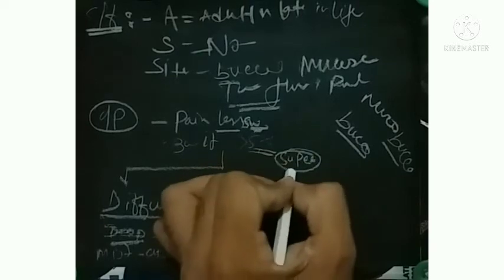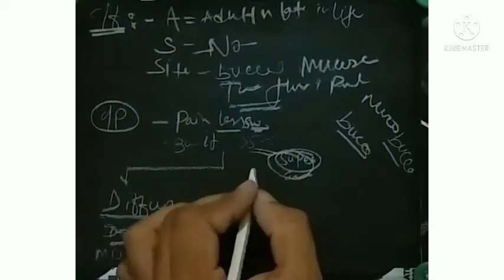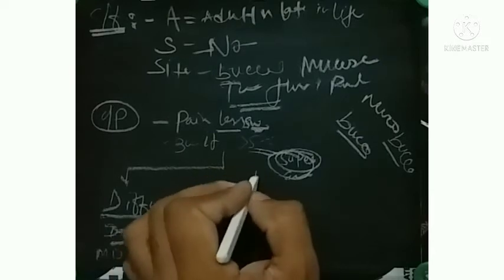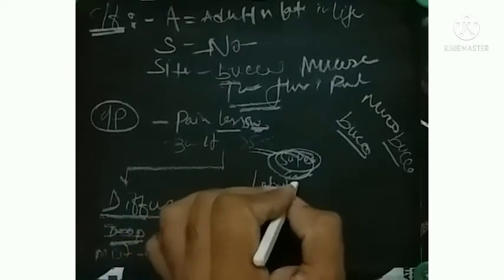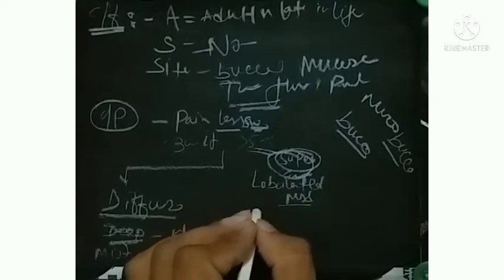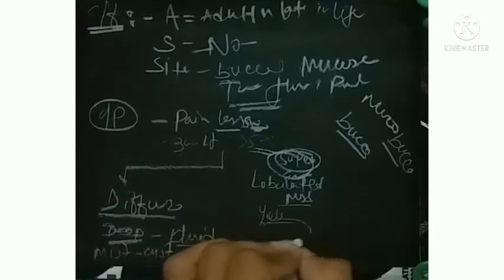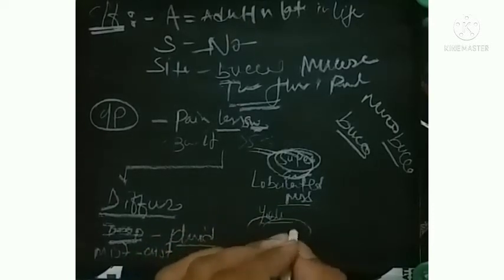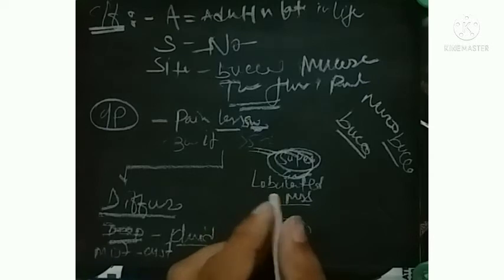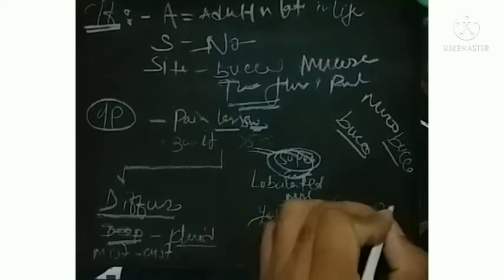The second one is the superficial form or encapsulated form. In the superficial form you will find that they are like a lobulated mass, and also pedunculated, yellow surface discoloration, and freely movable beneath the surface. They are yellowish and they will appear soft on palpation.